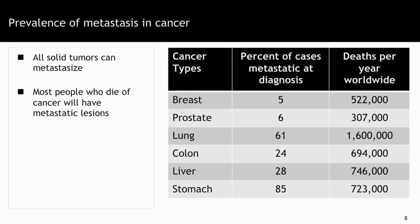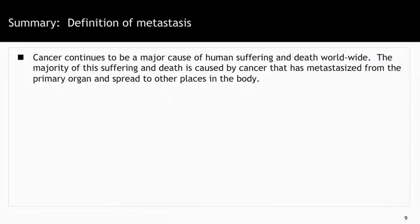You can see by the number of deaths worldwide due to the six most common cancers — breast, prostate, lung, colon, liver, and stomach — that metastatic cancer is still a huge problem, whether it's present at the time of diagnosis or whether it develops as a recurrence. In summary, cancer continues to be a major cause of human suffering and death worldwide. The majority of this suffering and death is caused by cancer that has metastasized from the primary organ and spread to other places in the body.